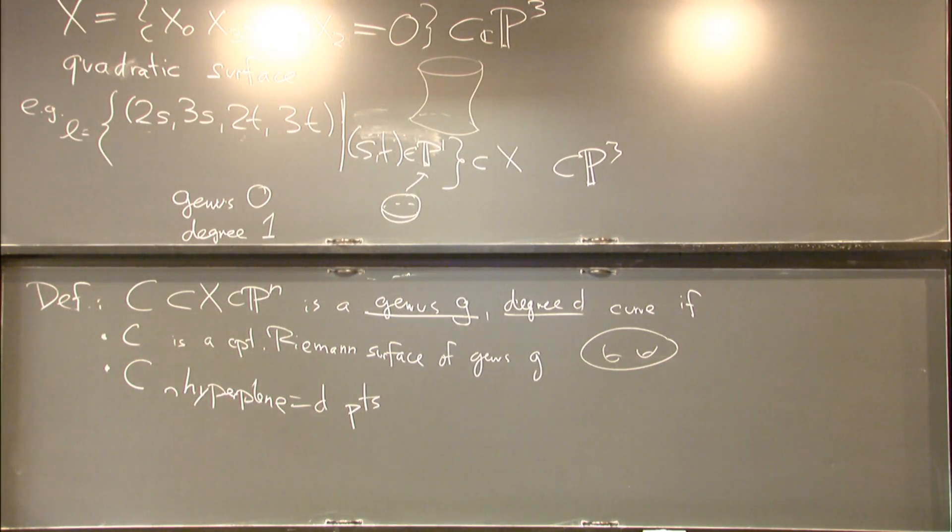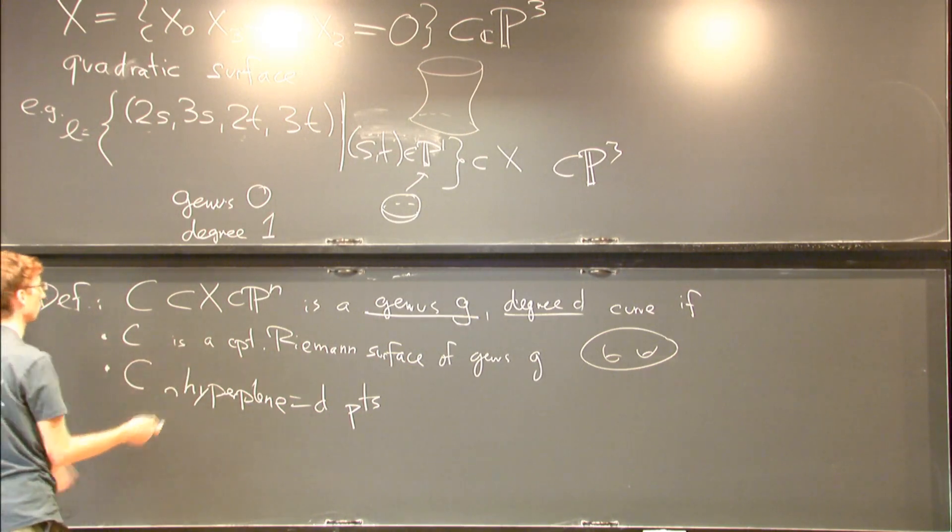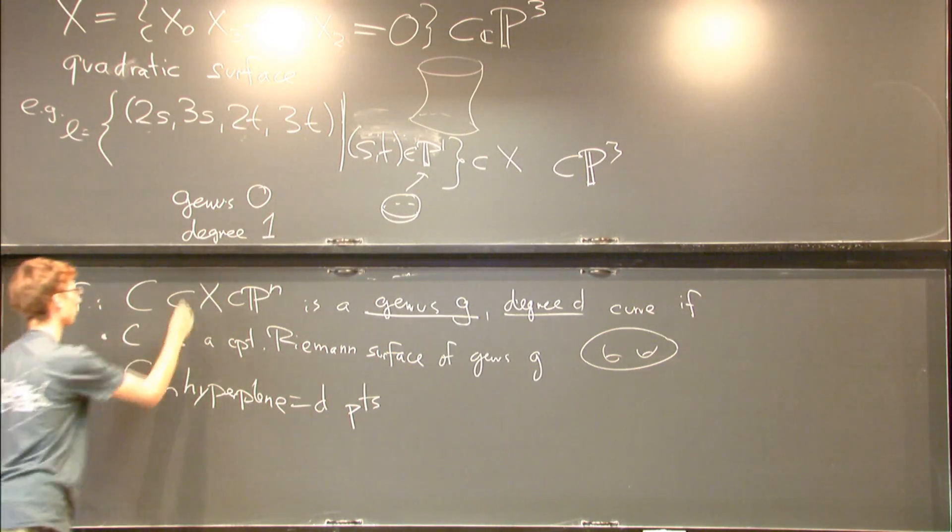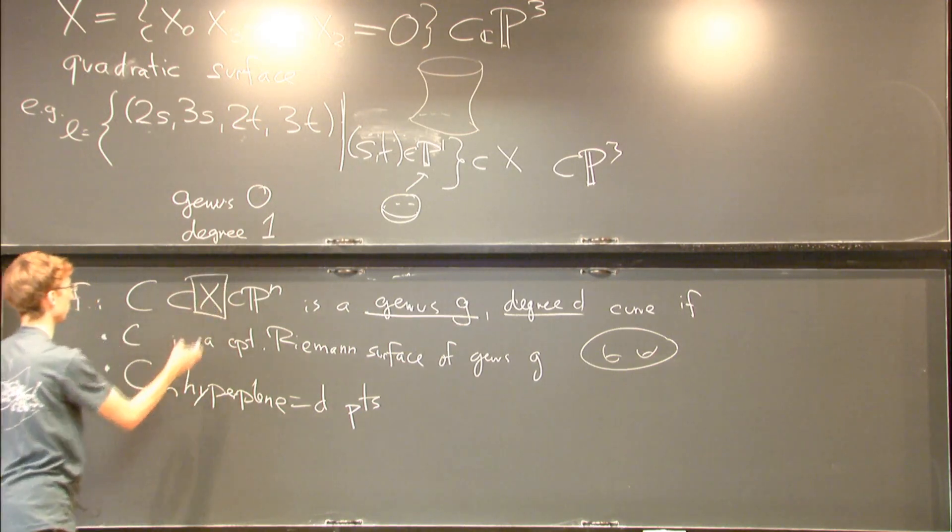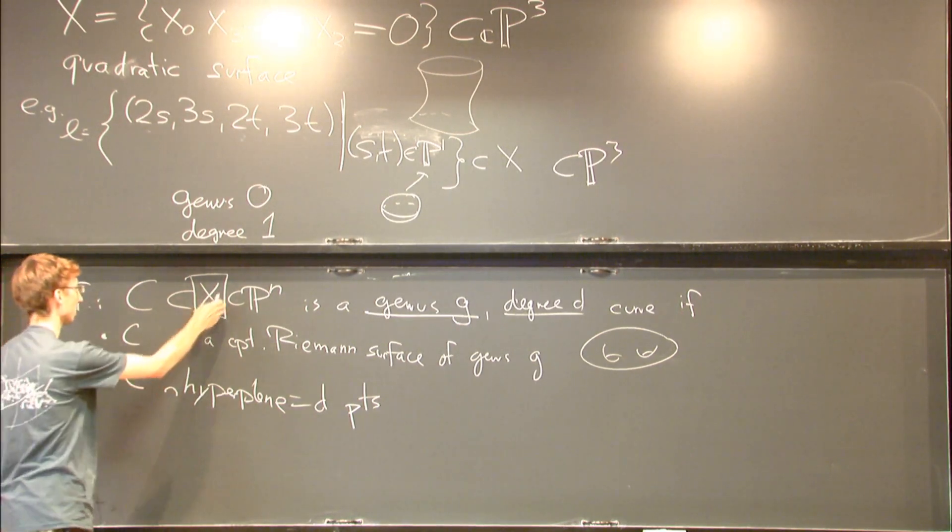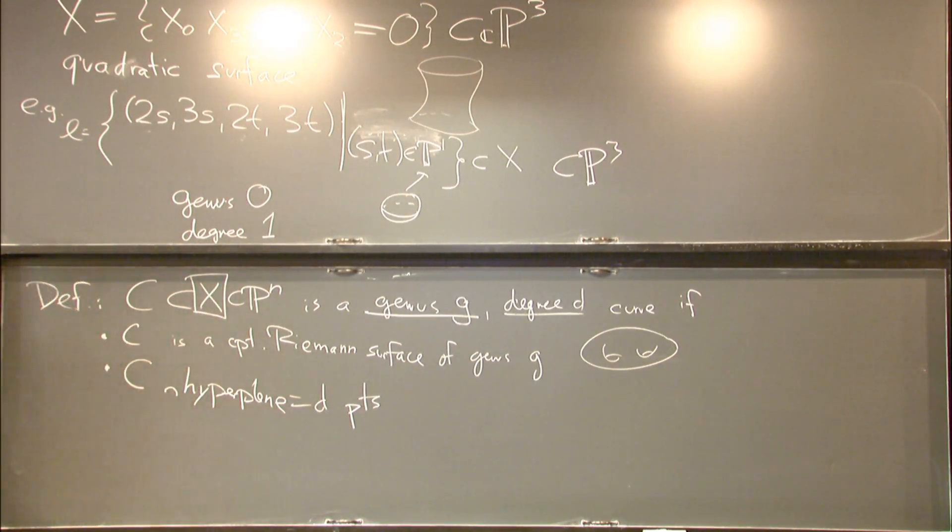So these are curves on algebraic varieties. Now I'm going to concentrate on - I told you about quadratic surfaces, but the main target in this talk is going to be a different, more interesting X. Any questions so far?